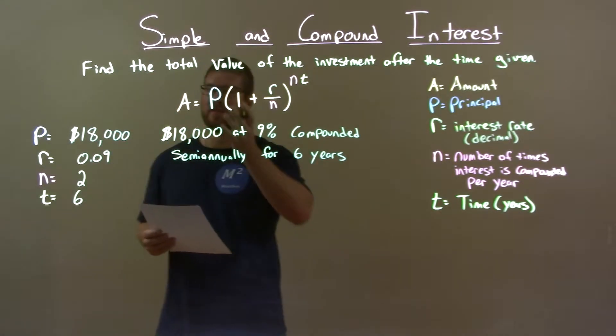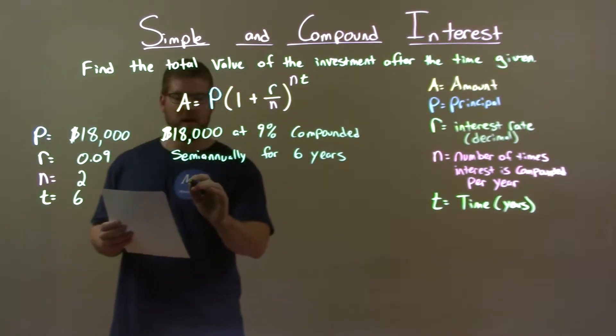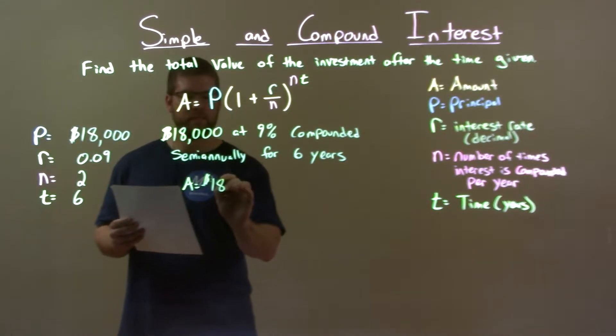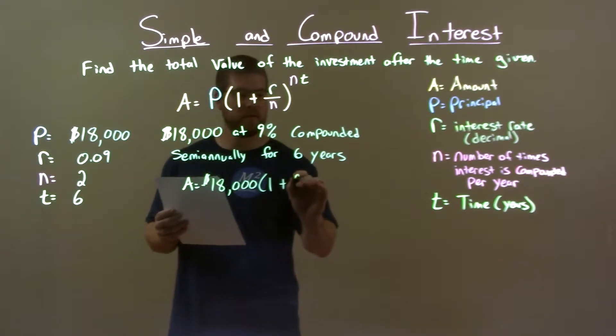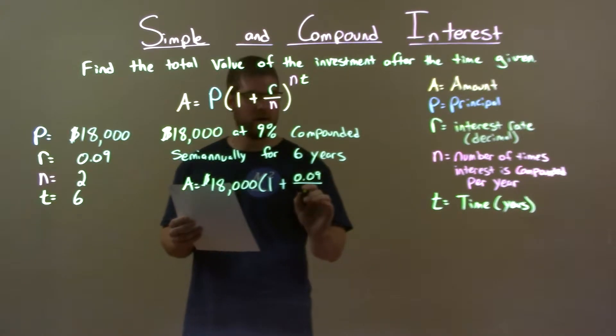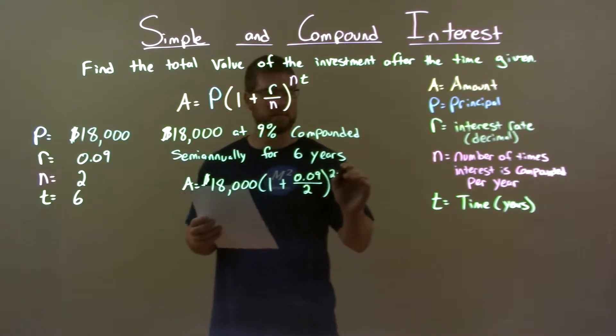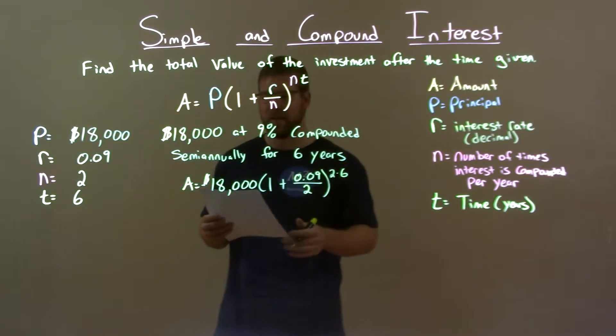With all that information, we just take our formula for compound interest and plug in our variables. A equals 18,000 multiplied by 1 plus interest rate as a decimal, 0.09 over the number of times we're compounding in a year, 2, times that number 2, times the number of years to the sixth power. Mark 2 times 6, all that to the exponent power.